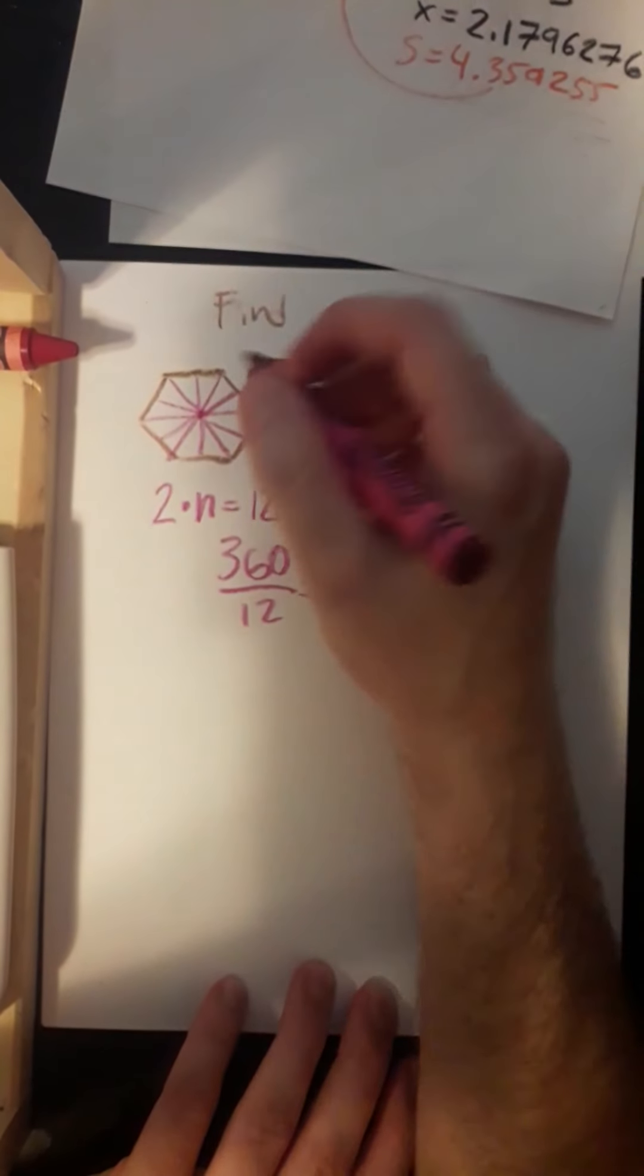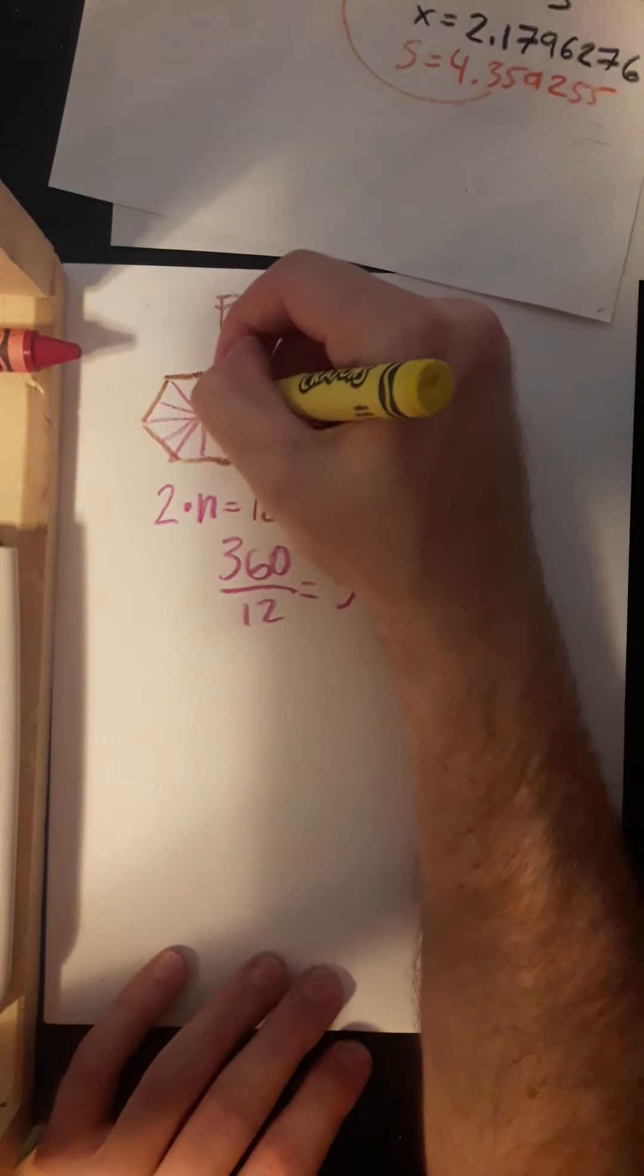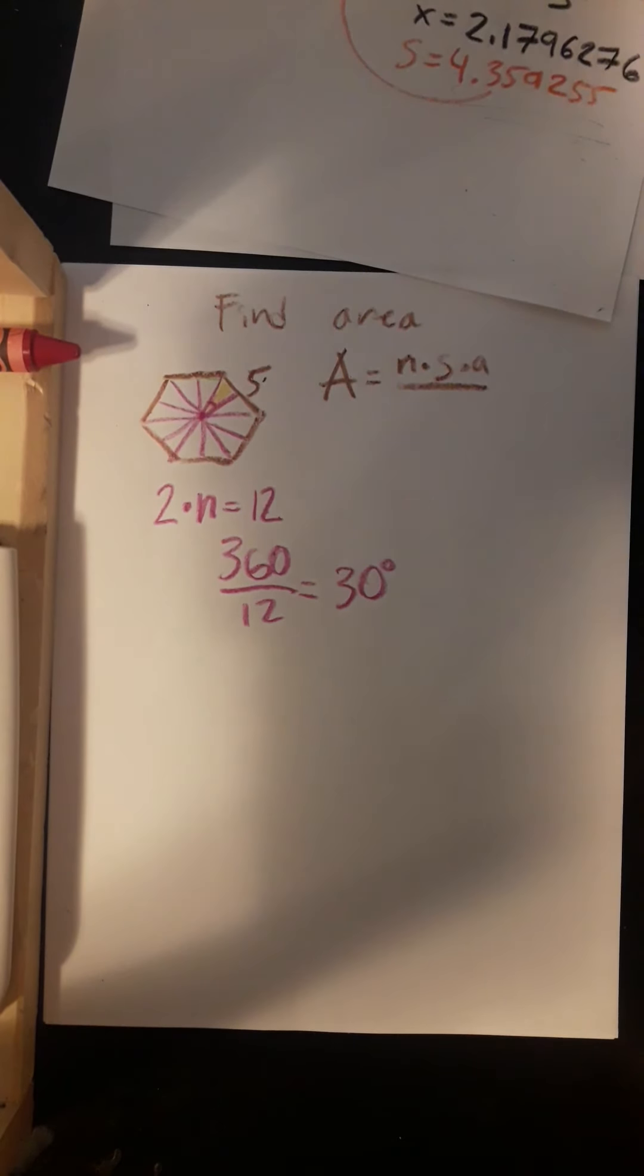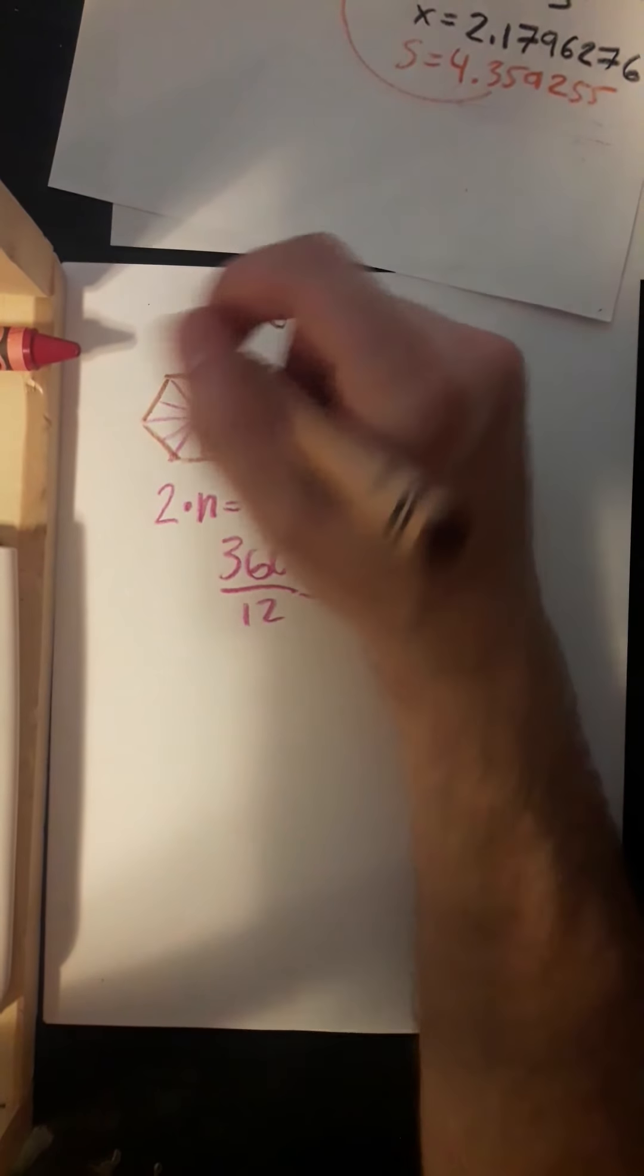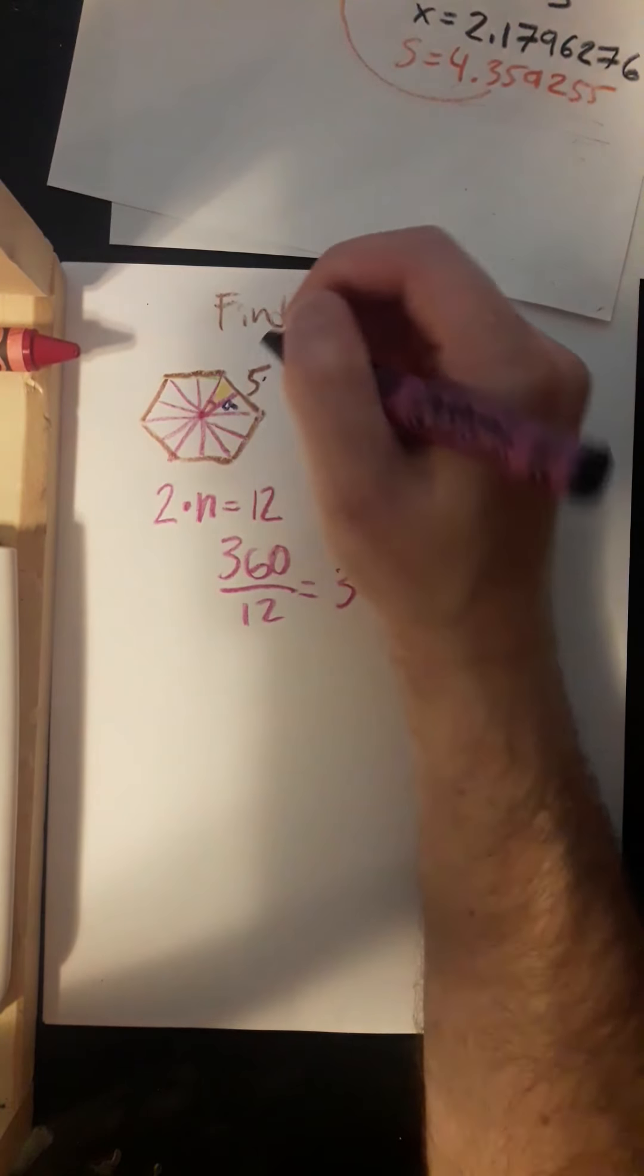Okay, so that means that I know that this top angle here of the triangle I've highlighted in yellow is 30 degrees. And we're going to try and solve for the apothem, which I'm going to label in purple with an A.